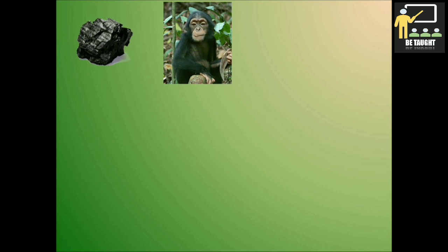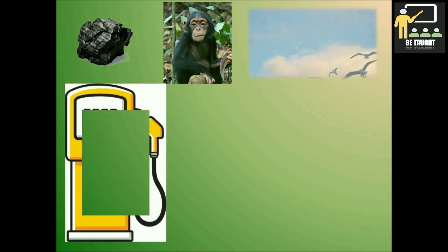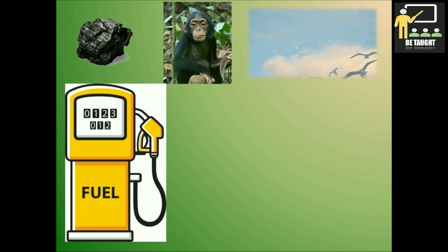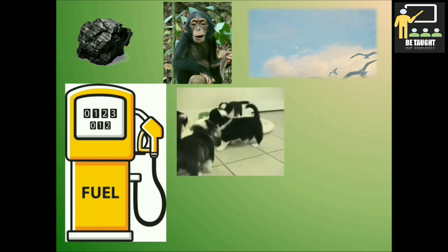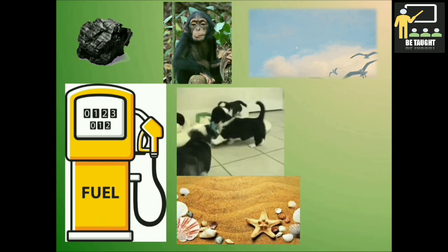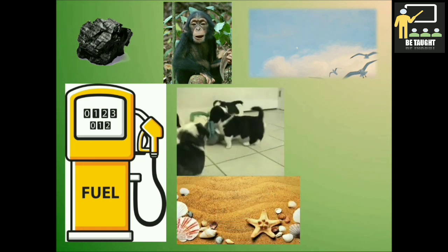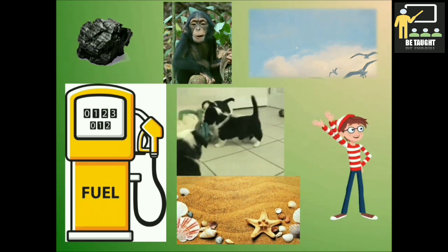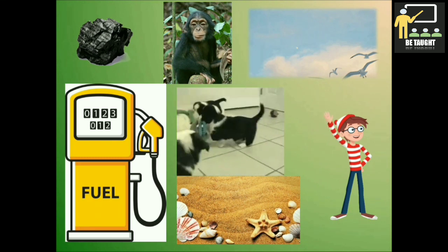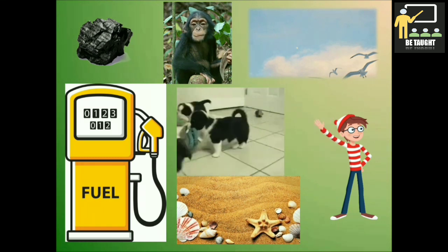We'll see few more examples like the coal, the animals, birds, the fuel that is petrol and diesel, different animals and their young ones, the sand and the different sea creatures, and the human beings. All these are natural things.